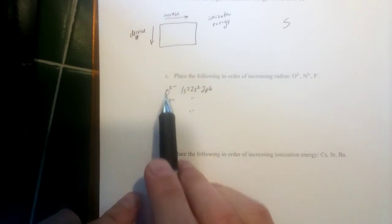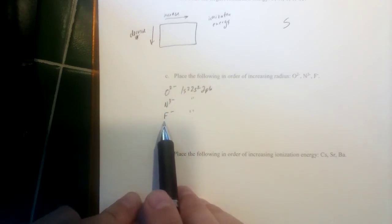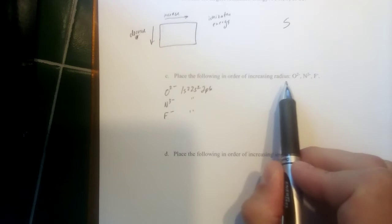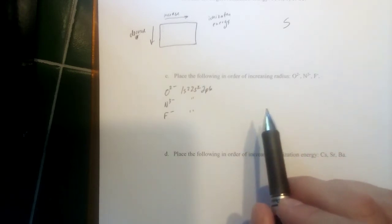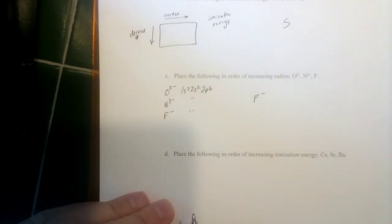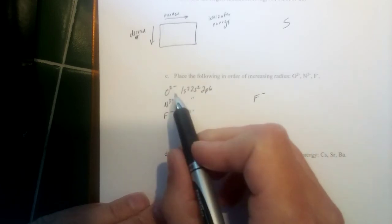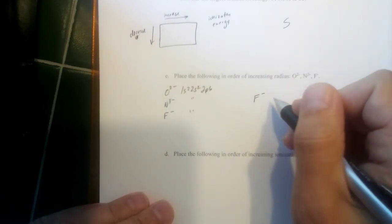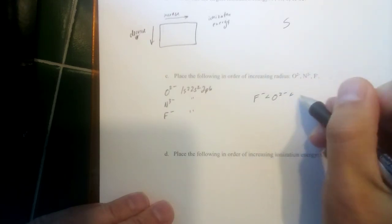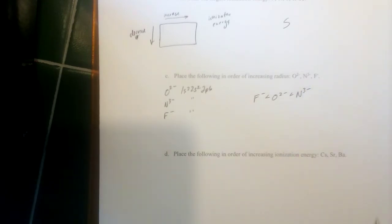When ions are isoelectronic, their size depends on the nuclear charge. The same cloud of electrons is contracted more by a nucleus with more protons, making a smaller ion. In order of increasing radius, fluoride (atomic number 9) is smallest, then the oxide ion (atomic number 8), then the nitride ion (atomic number 7) — the difference being the charge of the nucleus.